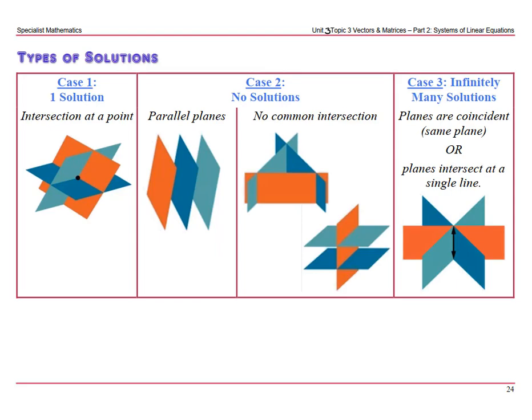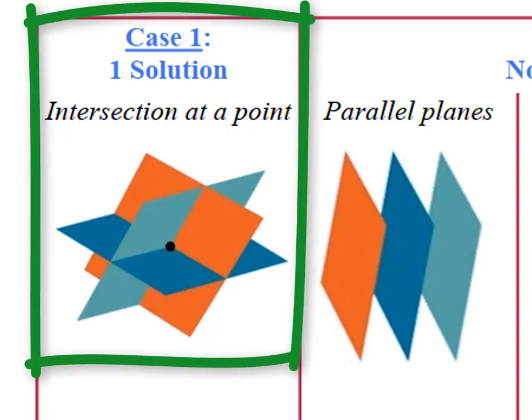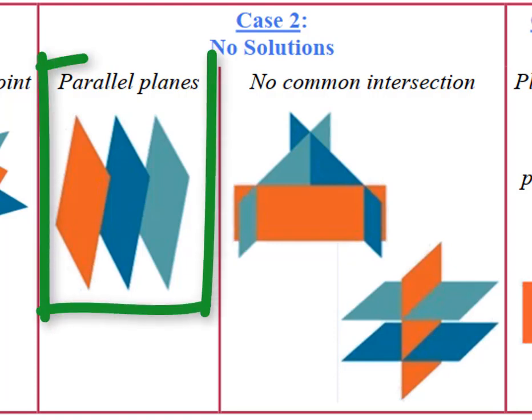So when we're looking at types of solutions with three dimensions we have three cases. One, as you can see from this picture, it intersects at one point. Case two we have no solutions. Now there's two possibilities for no solutions. One, they're parallel planes. So just like with two variables where you have parallel lines that never meet, if we have parallel planes they are not going to meet.